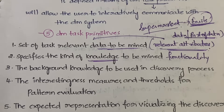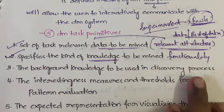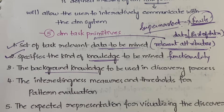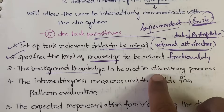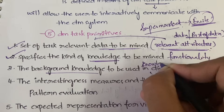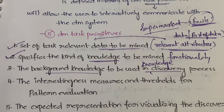The third primitive is the background knowledge to be used in the discovery process. Background knowledge is very important — just as when making these data mining videos, I must have already studied data mining somewhere. In order to do the knowledge discovery process, some background knowledge about the domain is required — whether you are working in a C programming domain, Python domain, or any other domain. For this background knowledge, we will be using concept hierarchies.